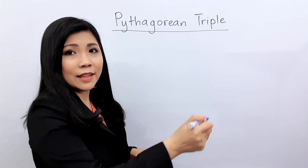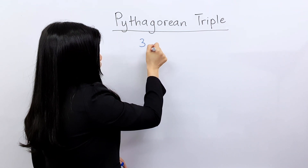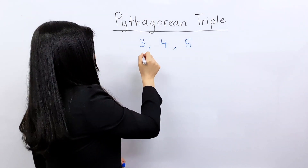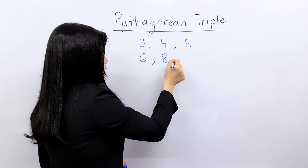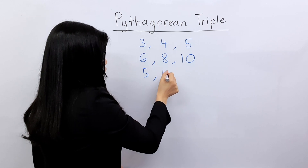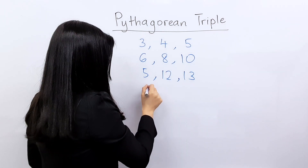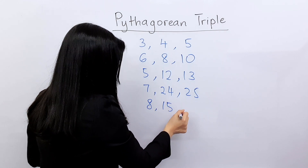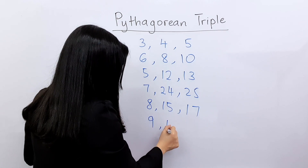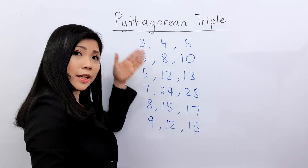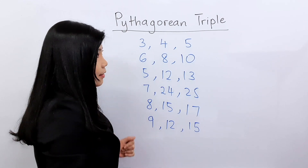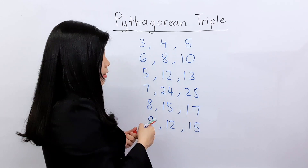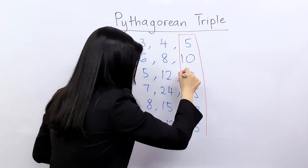I'm going to list them on the board now so that you can memorize them by heart and become a psychic. The triples are: 3, 4, 5; 6, 8, 10; 5, 12, 13; 7, 24, 25; 8, 15, 17; and 9, 12, 15. These are the most common Pythagorean triples asked in exams. The longest side in each triple will be the hypotenuse of the right-angled triangle.